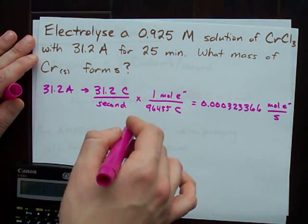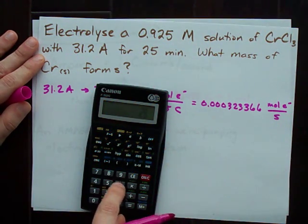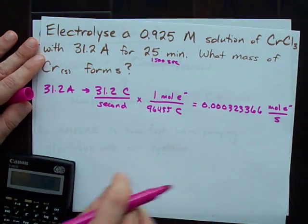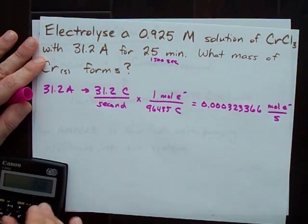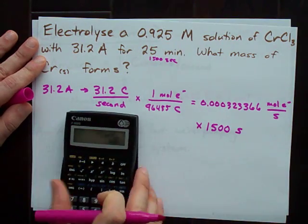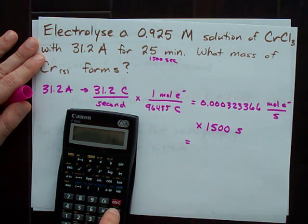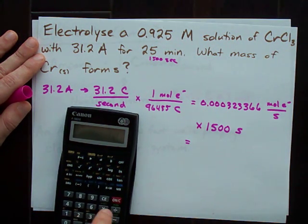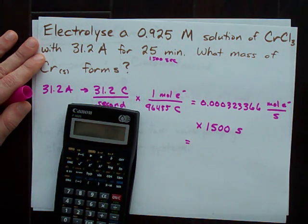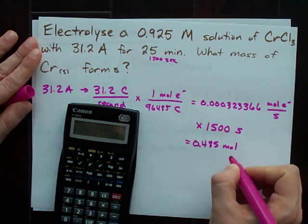So how many electrons have I pumped in over 25 minutes? Well, what I'm curious of is how many seconds that is. Turns out that's 1,500 seconds. And if I'm pumping in this many moles of electrons every single second, I have to multiply it by 1,500 seconds to count the total number of electrons that I pumped in. Times 1,500 means I've pumped in 0.485 moles of electrons.